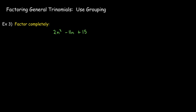Let's look at these same examples using a different technique. Because for some people, going through all of those trial and errors is very time consuming or they just can't do it mentally. So here's an alternative: we're going to rewrite that negative 11n as the sum of two terms, which means in the end I'll have four terms and I can use grouping.